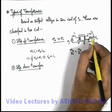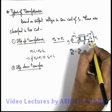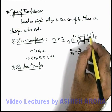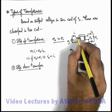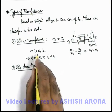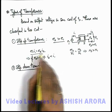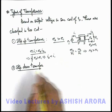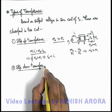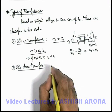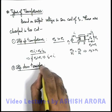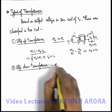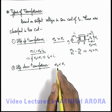So in the secondary coil circuit, the current will certainly be less than the current in the primary coil, because the overall power remains constant in the case of an ideal transformer. Similarly, we can define a step-down transformer as one in which e2 is less than e1.